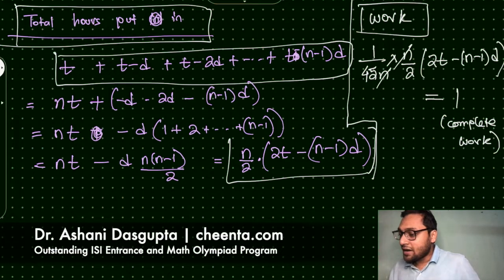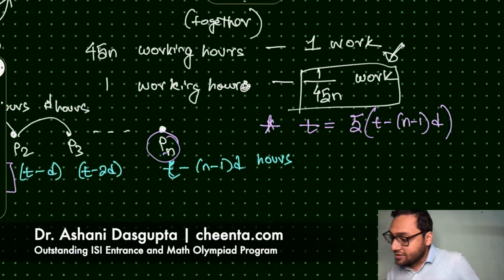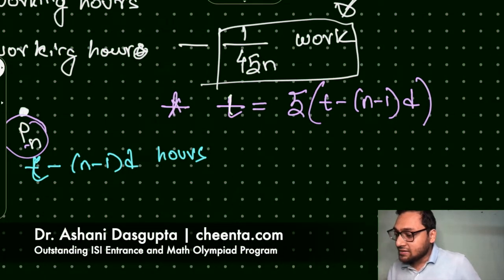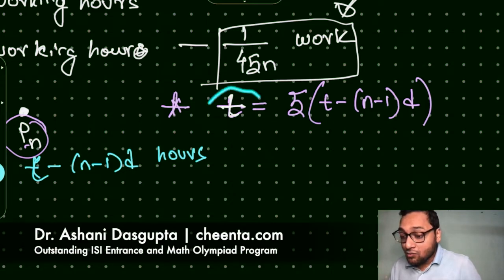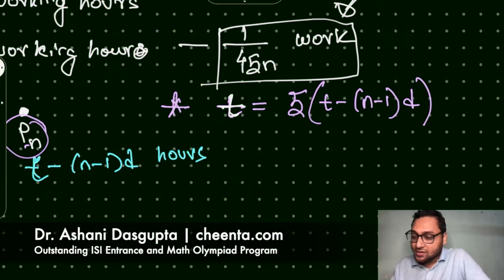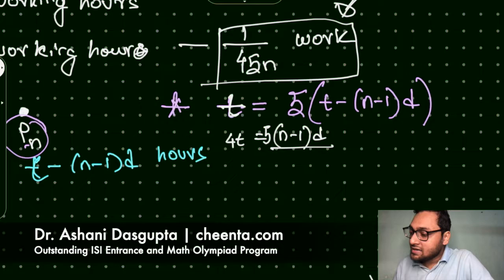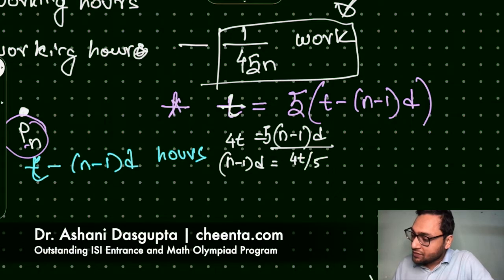Okay, so we have this: we have 1 over 90 times (2t minus (n-1) into d) is equal to 1. Great! One more thing we have here is this data t, which is the first person's amount of work is equal to 5 times the last person's amount of work. So let's use that. We have from here 4t is equal to (n-1) into d times 5, so (n-1) into d is 4t by 5.